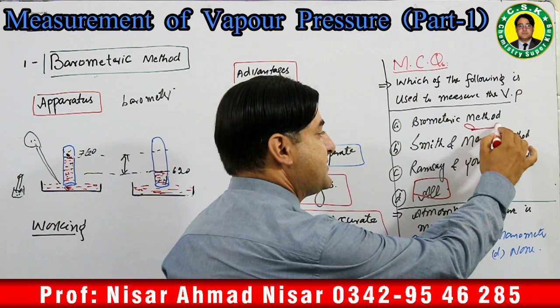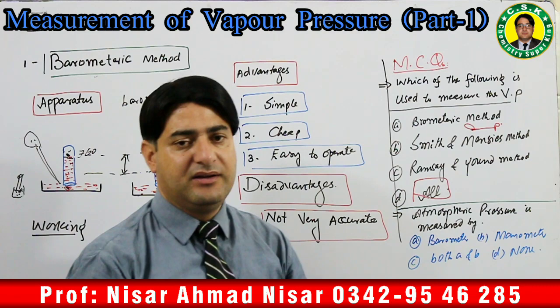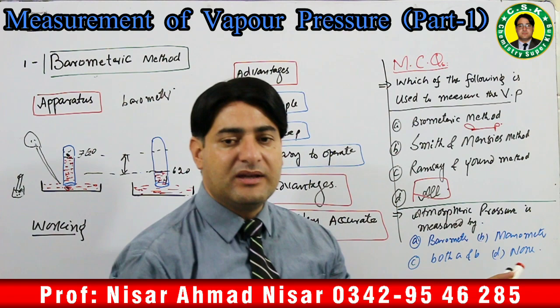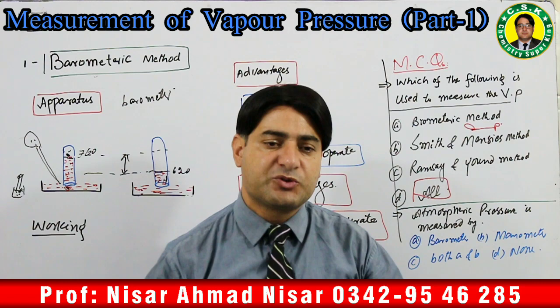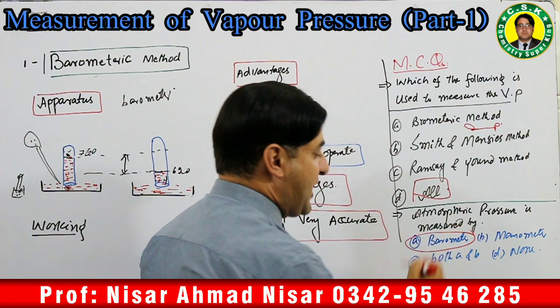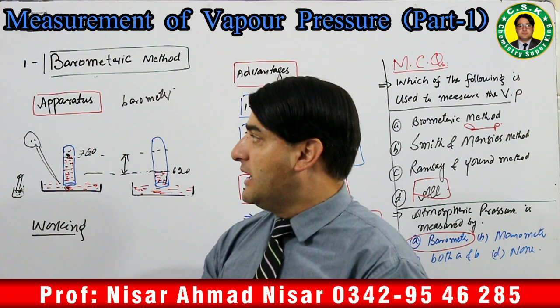Next MCQ: Atmospheric pressure is measured by — options: barometric method, manometric method, both, none of these. Yaad rakhna students, atmospheric pressure ko measure karne ke liye jo apparatus hum use karte hain us ko hum barometer kehte hain. To atmospheric pressure measure karta hai barometer. Answer: barometric method.